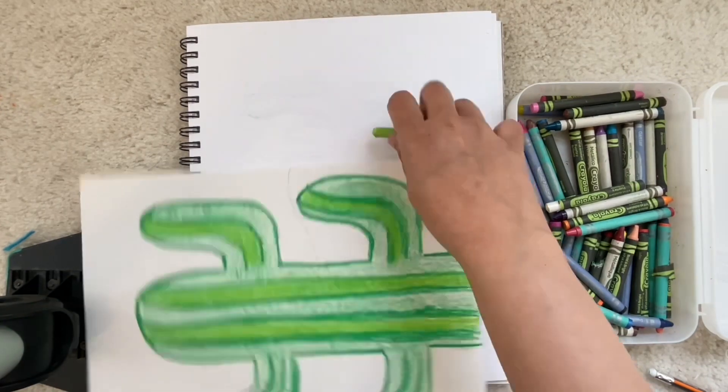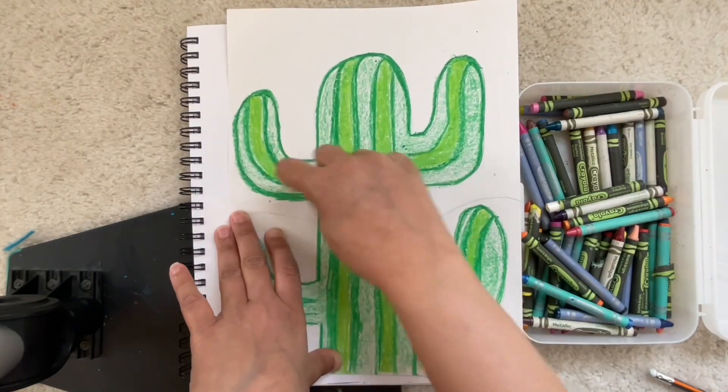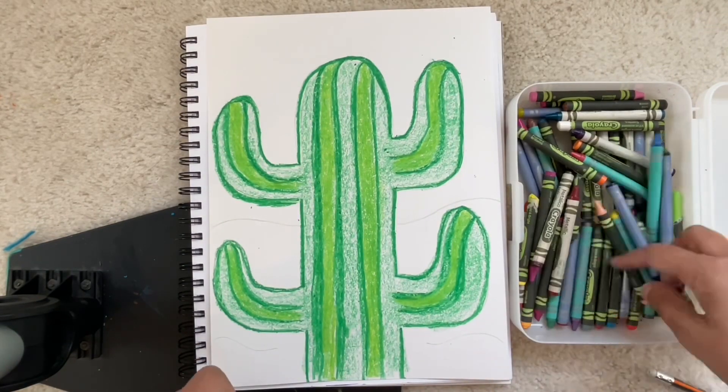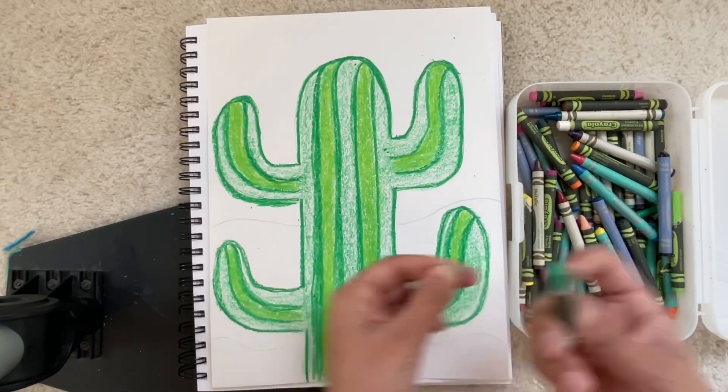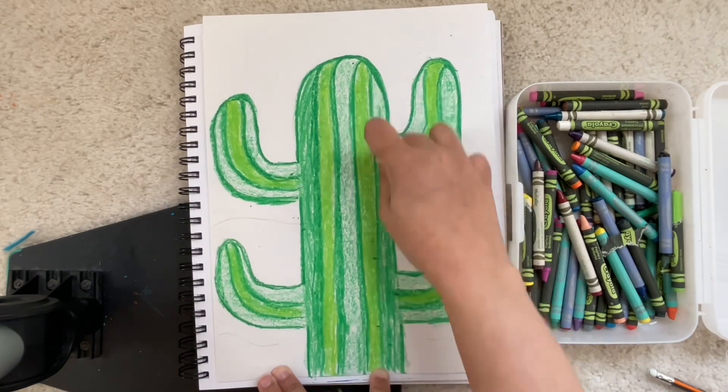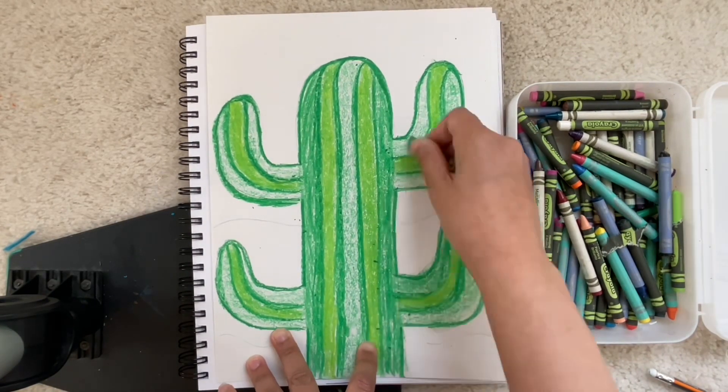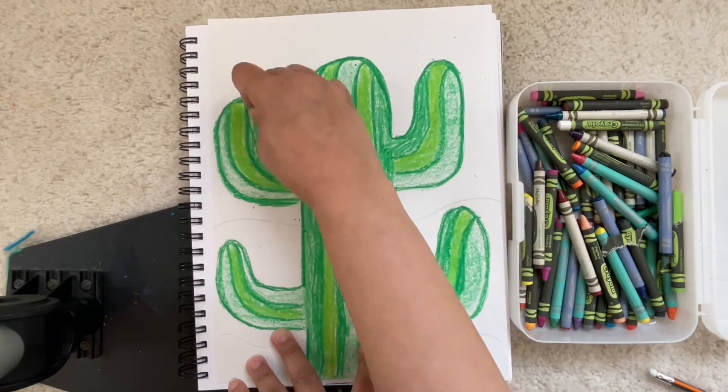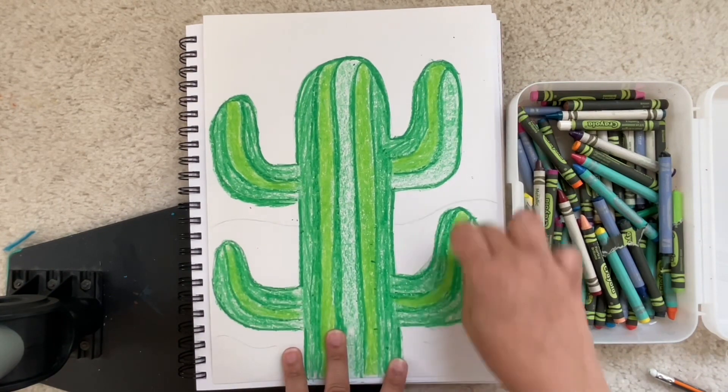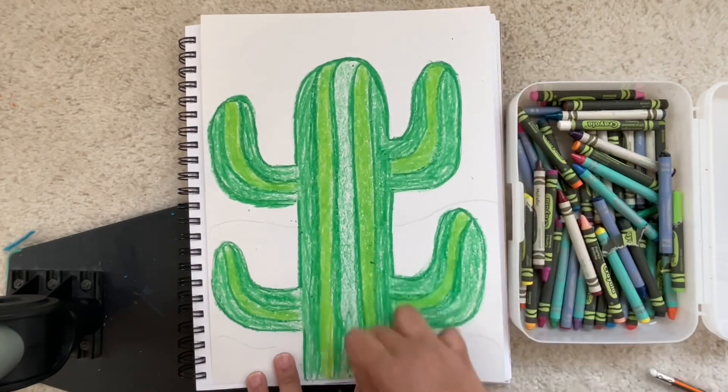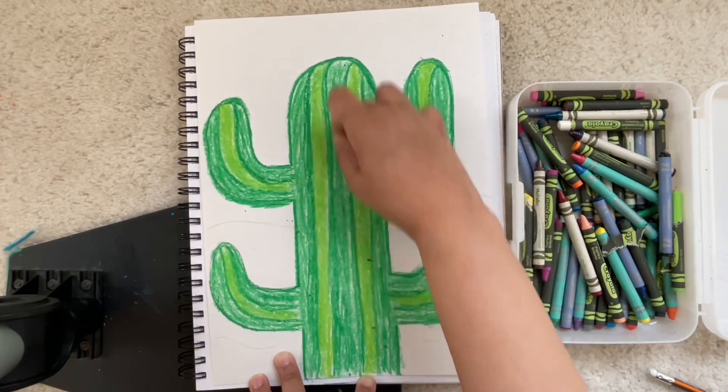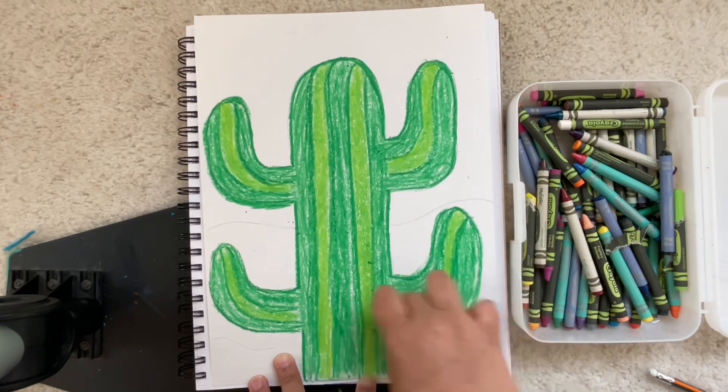This is what's going to help bring value because you don't want to just color your entire cactus green, you want to show the lines. Then I'm going to find that green that I originally used and just kind of color dark in two other areas and just that helps give our cactus some form.